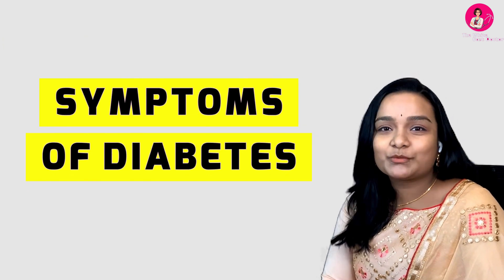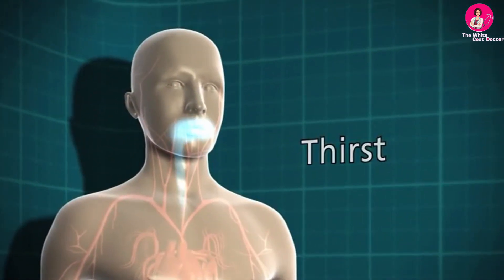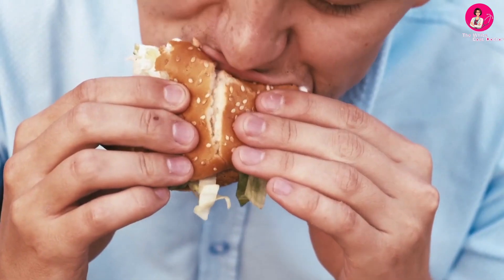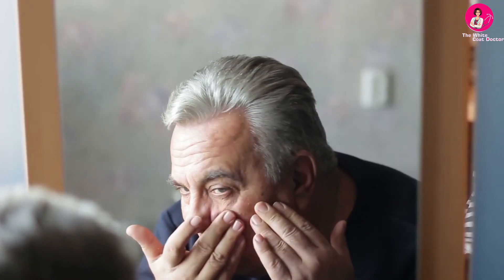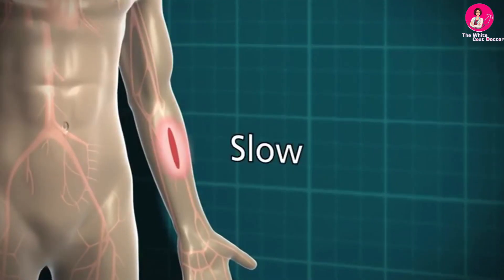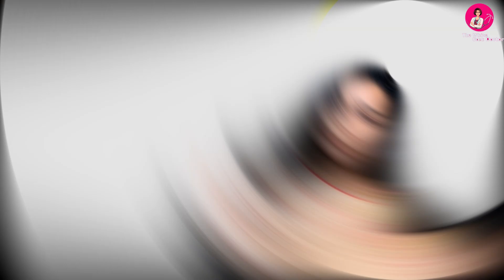What are the symptoms of diabetes? People who think they might have diabetes must visit a physician for diagnosis. They might have some or even none of the following symptoms: frequent urination, excessive thirst, unexplained weight loss, extreme hunger, sudden vision changes, tingling or numbness in the hands or feet, feeling very tired most of the time, very dry skin, sores that are slow to heal, and frequent skin or urinary infections are some of the common symptoms.